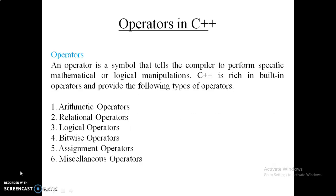Starting from operators in C++: operators are nothing but symbols that tell the compiler what mathematical or logical operation has to be performed on the operands. In C++, the operators are the same as in C, which you have already learned. The list of operators in C++ includes: arithmetic operator, relational operator, logical operator, bitwise operator, assignment operator, and miscellaneous operator.